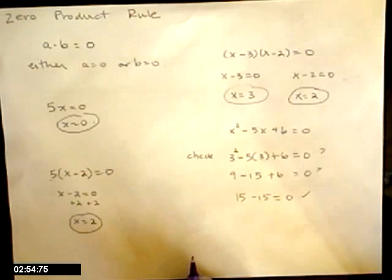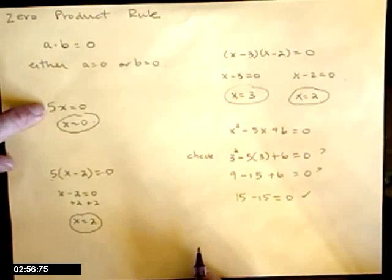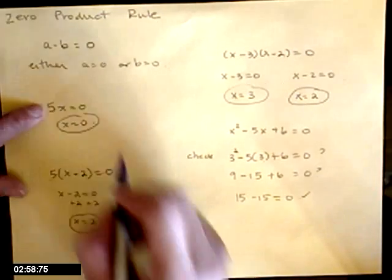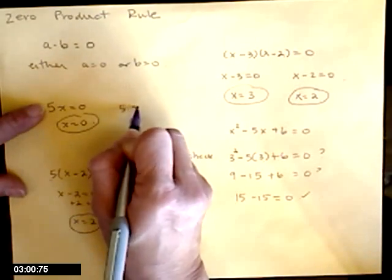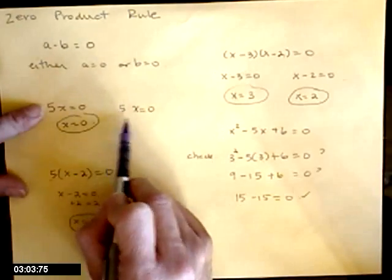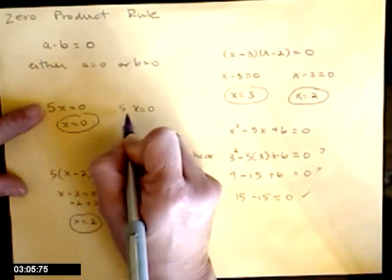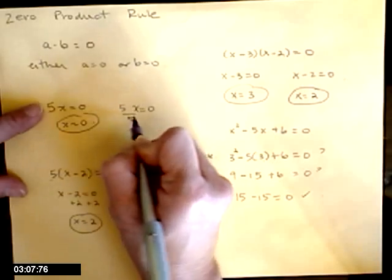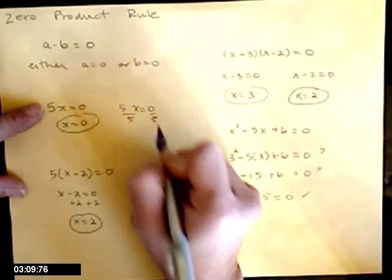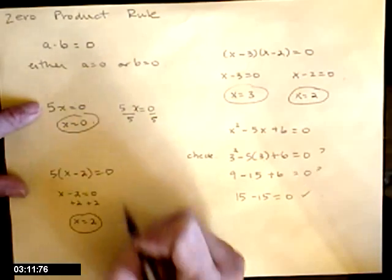So just to review, going back here, you're solving linear equations from chapter 2. If 5 times x equals zero, to get the x by itself to get rid of the 5, you would either divide both sides by 5 or multiply by 1 fifth, same thing. But you have to do the same thing to both sides.